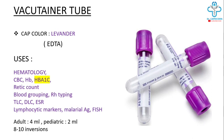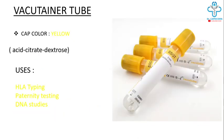The lavender tube is also used for lymphocytic markers, FISH, and malarial antigen. For adults, the amount of blood collected is 4 milliliters, while in pediatrics 2 milliliters is taken. Eight to ten inversions are required.